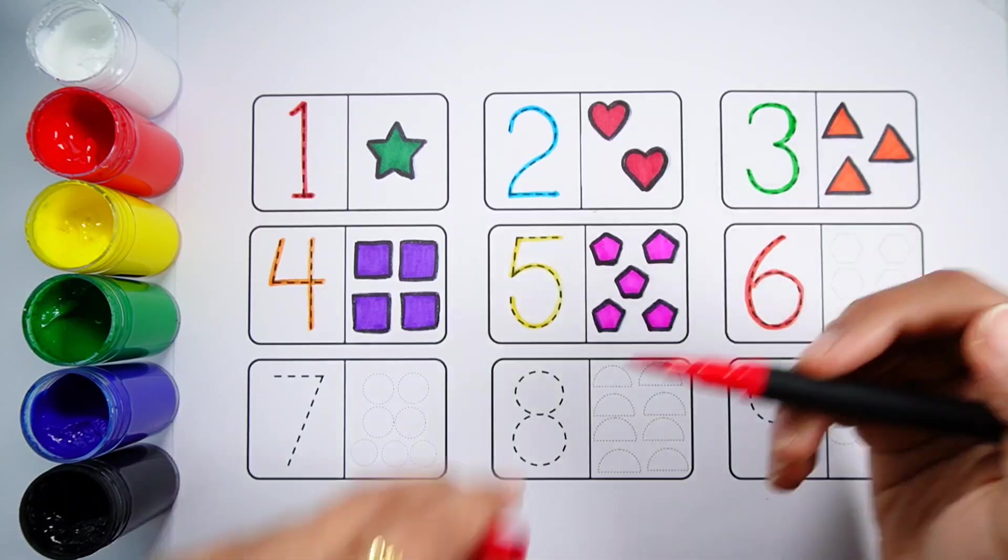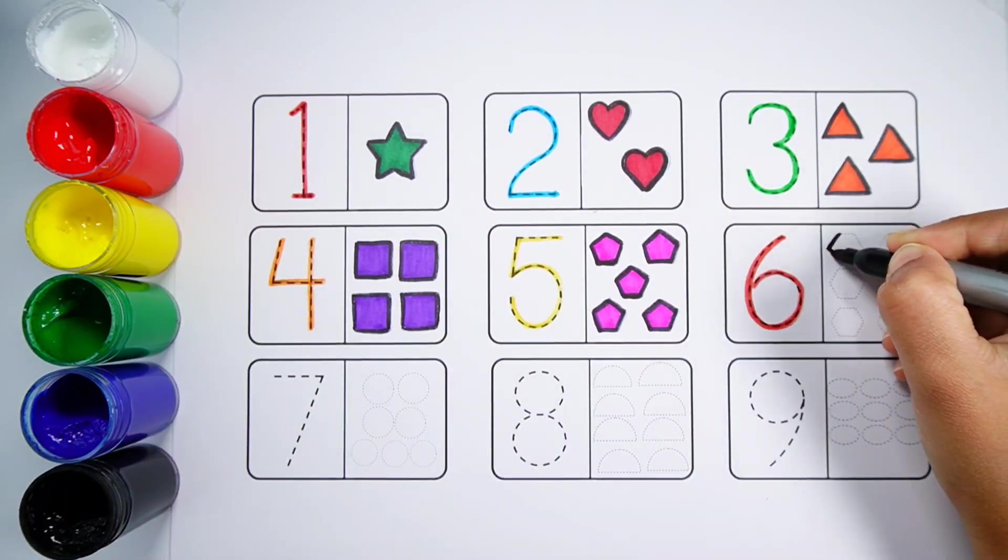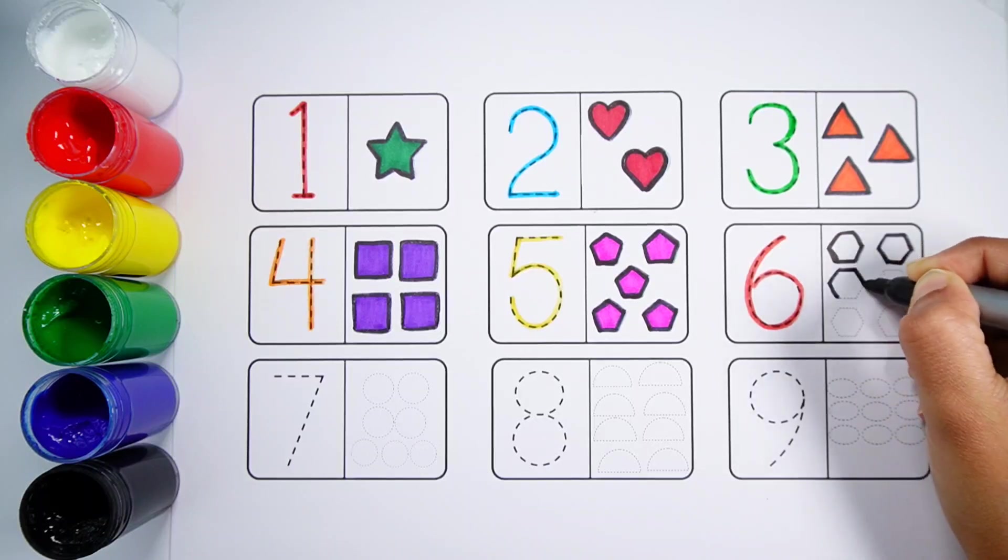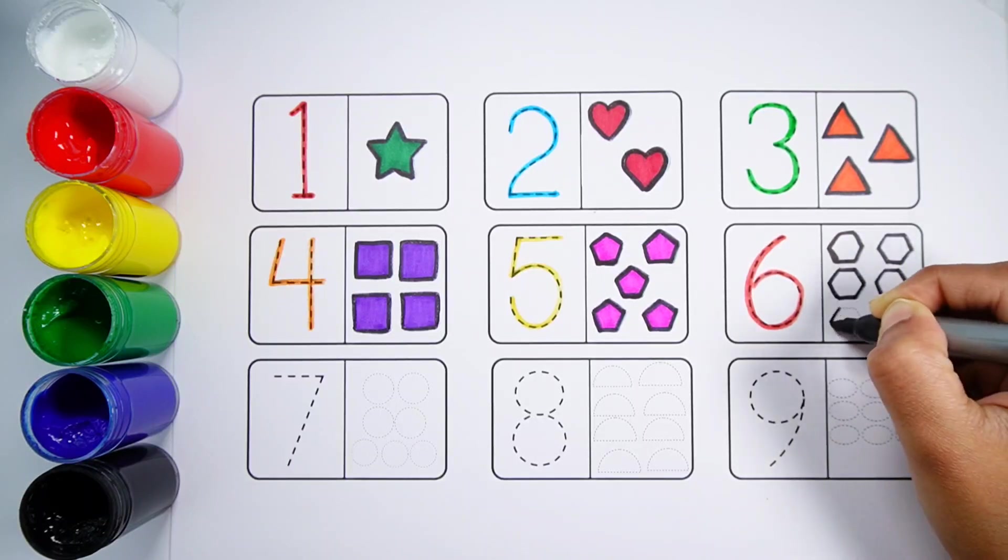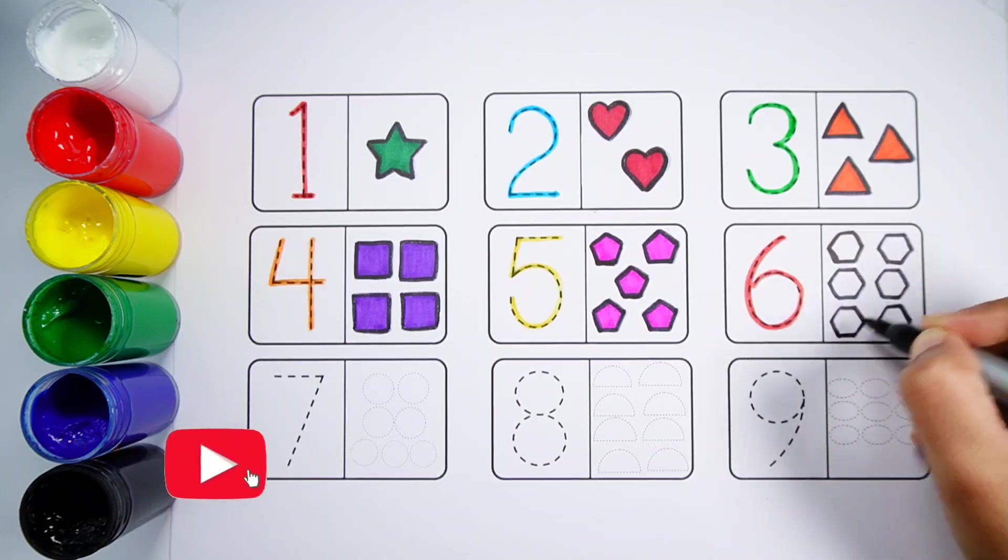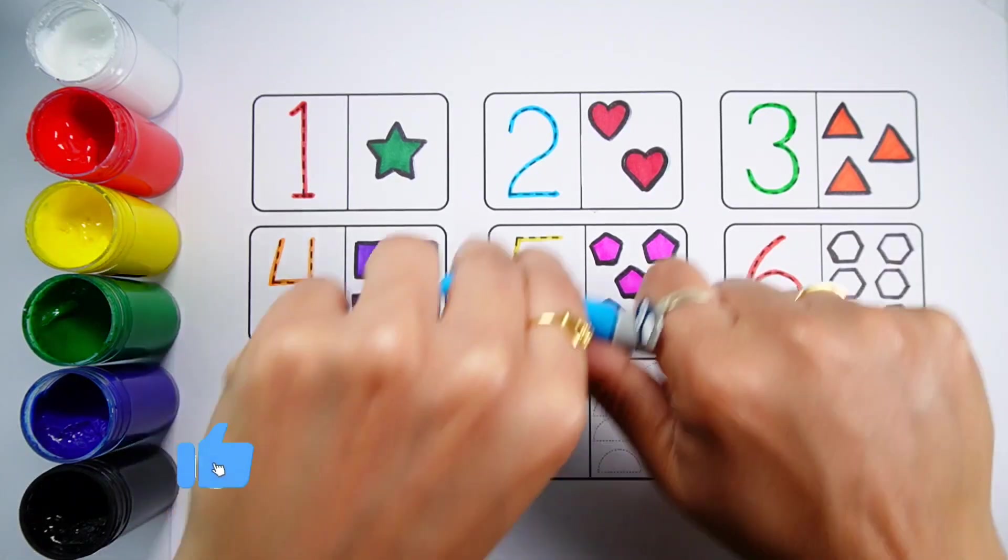Number 6. One Two Three Four Five Six. Six Hexagons. Blue Color.